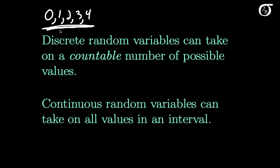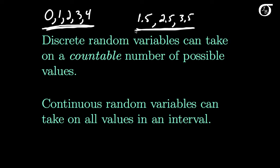Discrete random variables do not always represent a count. We might have a discrete random variable that takes on the values 1.5, 2.5, and 3.5. These aren't count data, but we have these three possible values that our random variable can take on, and as such it's going to be a discrete random variable.